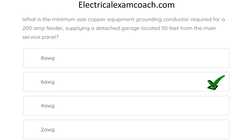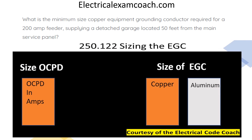The correct answer is 6-gauge wire. It doesn't matter if it's 50 or 100 feet from the panel — the test makers love to include distances to throw you off. An equipment grounding conductor is required, and it must be sized per table 250.122. We start on the left-hand side and select our overcurrent protective device rating, which is 200 amps. Then we cross over to the copper column and select number 6.